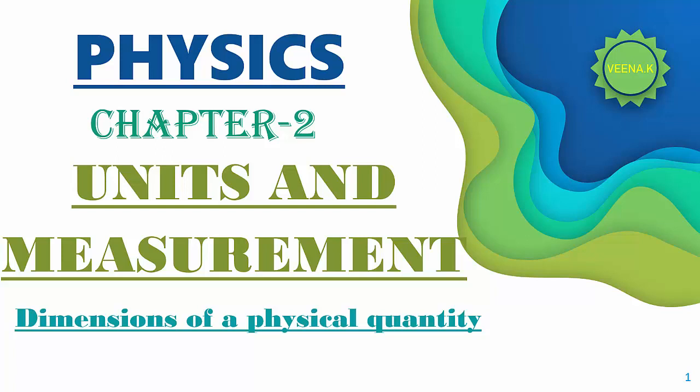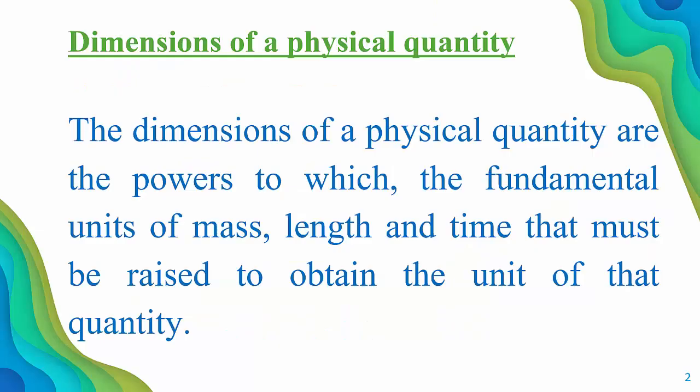Today I am going to start a new topic from the same chapter: dimensions of a physical quantity. First, we have to know what dimensions are. In general, dimensions mean length, breadth, and height. A physical quantity is one that can be expressed in terms of numerical values — for example, time, velocity (10 meters per second), and temperature (100 degrees Celsius).